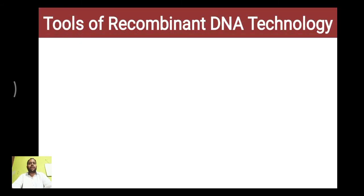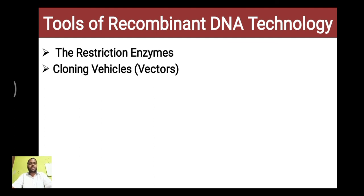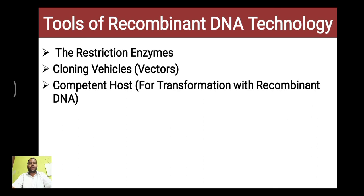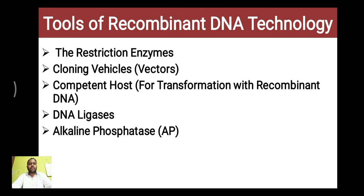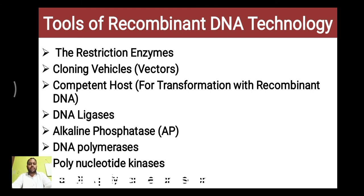Let's see what tools are required in recombinant DNA technology. First and foremost is the restriction enzymes. The next is cloning vectors. Competent host cell — in case of bacteria it is called competent cells, in case of plant there will be plant cell, in case of animals there will be animal cells. Then DNA ligase, alkaline phosphatase, DNA polymerase, polynucleotide kinase, Taq DNA polymerase, and so on.